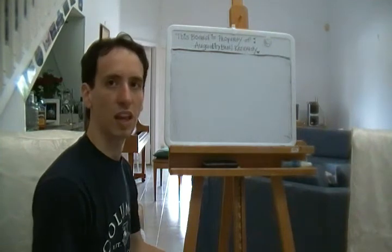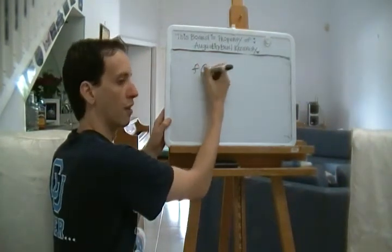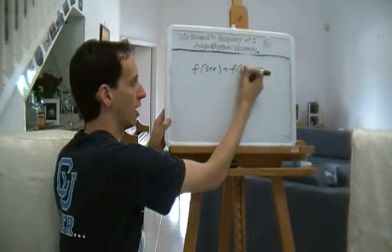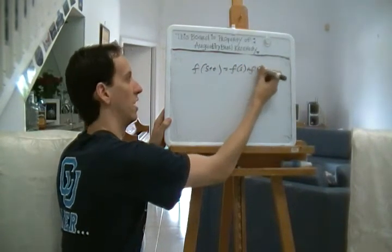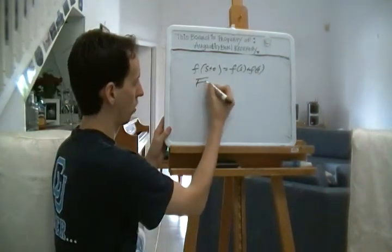True or false? If f is a function, then f of s plus t equals f of s plus f of t. Well, you should know, by this point, that that statement is false.